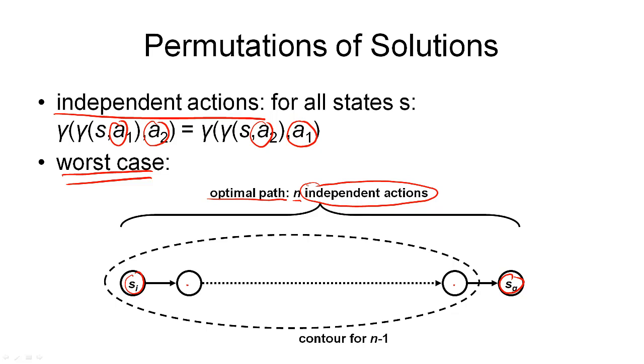Remember what I said earlier about contours: A*, if the optimal solution length is n in this example, will need to generate all the nodes within a smaller contour. If the f value is n minus 1, then this is the contour that A* will generate, with the f value being equal to n minus 1.